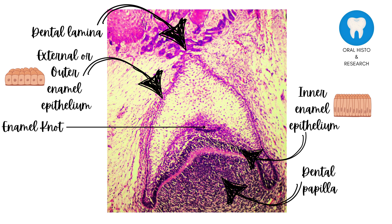The dental follicle and dental papilla become more recognizable during this stage than the bud stage. Another structure called the enamel knot is formed during this stage, representing a collection of cells in the center of the inner enamel epithelium. It is a transitory structure believed to contribute cells to the enamel cord.